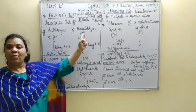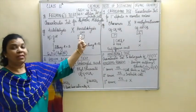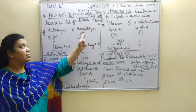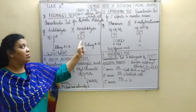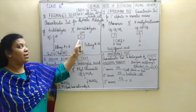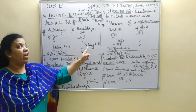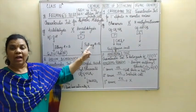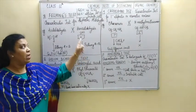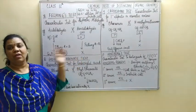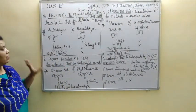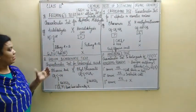Since benzaldehyde is an aromatic aldehyde, the reason it does not give the Fehling's test is resonance — because of resonance stabilization, the Fehling's solution, being a mild oxidizing agent, will not give any observation in case of benzaldehyde. This was the Fehling's test.